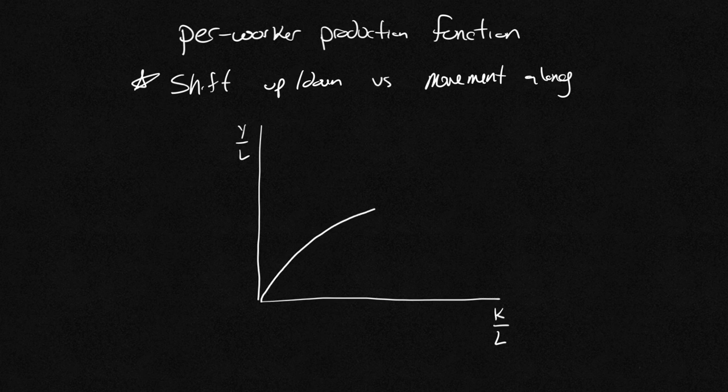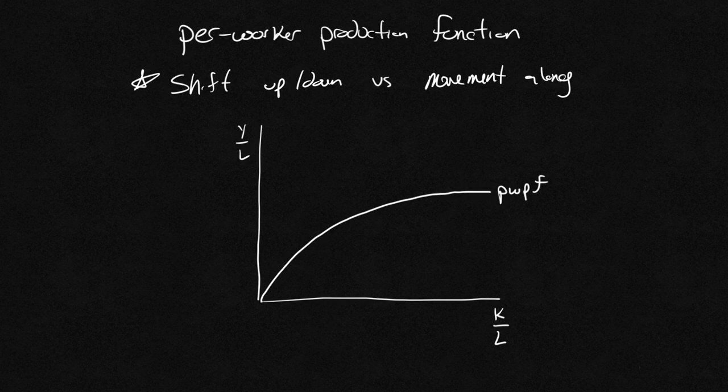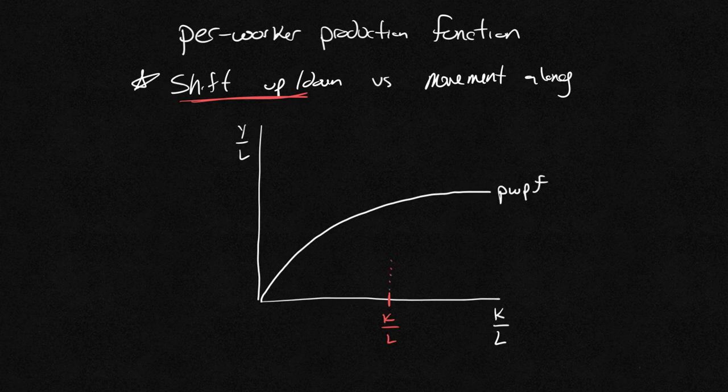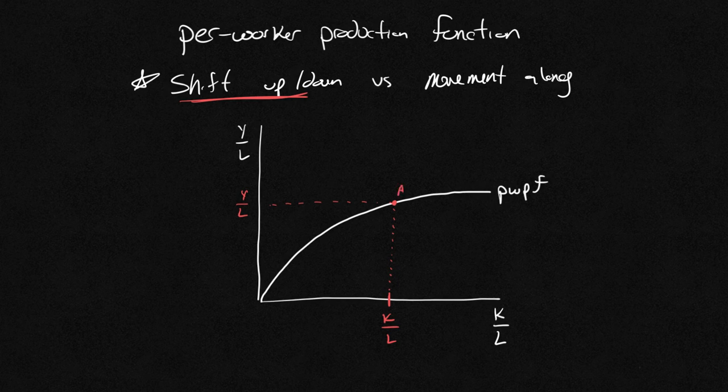this per worker production function, is going to exhibit diminishing marginal returns. This is my per worker production function. So now we're going to talk about two different things. Let's go with red to talk about a shift up or down. The idea of a shift in the per worker production function is you're keeping the same level of capital to labor. In our initial function, we would get some level of output per labor hour. Let's just call this point A so we can kind of see where this is.